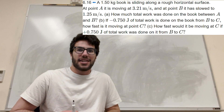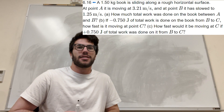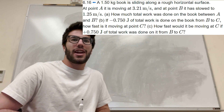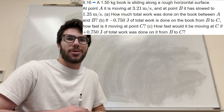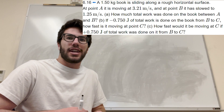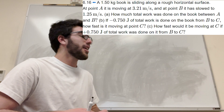What's up, Calc gang? Let's explain this problem here. We got a book sliding across a rough surface at point A, and then it goes to point B. How much work has been done on the book between A and B?